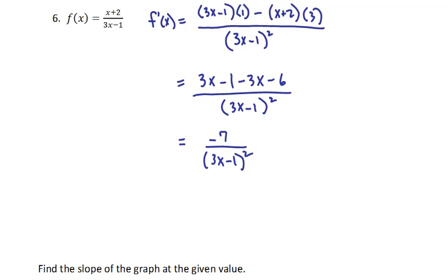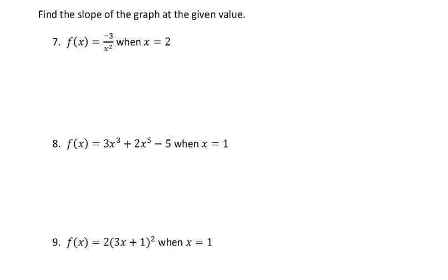I'll scroll up to number 7. In these three problems we want to find the slope of the graph at the given value, which really just means we want the derivative of f(x) when x equals the given value. The first one is f(x) = -3/x².